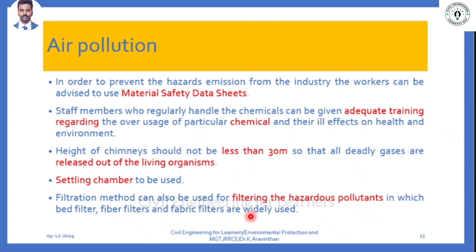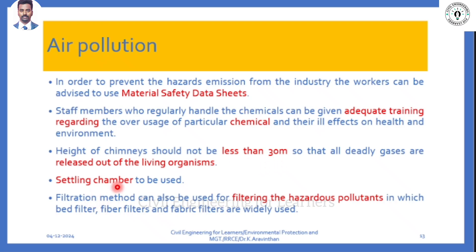Air pollution is much lesser in textile industry, though some air pollution comes from boilers during heating. To address this, industries should have a Material Safety Data Sheet, provide adequate training, and have a chimney of at least 30 meters height on boilers. This height ensures the most harmful gases are released away from living organisms. Polluted gas should not be consumed by humans. Industries should also have settling chambers and filtering methods for filtering hazardous pollutants.